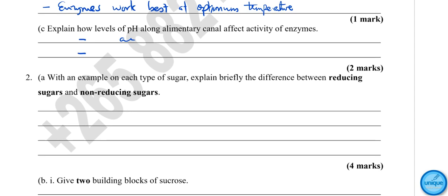Another question was: with an example on each type of sugar, explain the difference between reducing and non-reducing sugars. Reducing sugars are sugars that are capable of acting as reducing agents in a Benedict solution. A good example of reducing sugar is glucose.